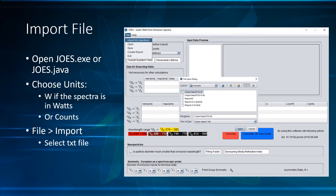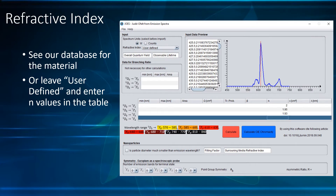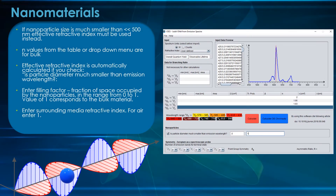The correct refractive index values are crucial. First see if your material is listed in our database with more than 150 different hosts. If that is not the case, enter the refractive index values for each transition in the table. The refractive index for the 5D0 to 7F6 transition is optional. If the spectrum is from nanoparticles that are much smaller than the wavelength of light, the correction to the refractive index must be used — it is enough to know the fraction of space the nanoparticles occupy.